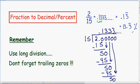So the fraction 2 over 15 written as a decimal is 0.13 with the three repeating. And as a percentage it is 13.3 with the repeating three percent.